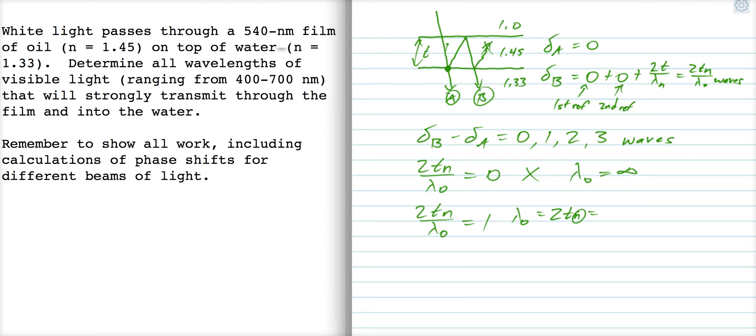Now the N we're talking about is the index of the film, which is 1.45. So 2 times the thickness, the thickness T is 540 nanometers. So 2 times 540 times 1.45 is 1566 nanometers. Now that's outside the range of visible light, so we don't use that.